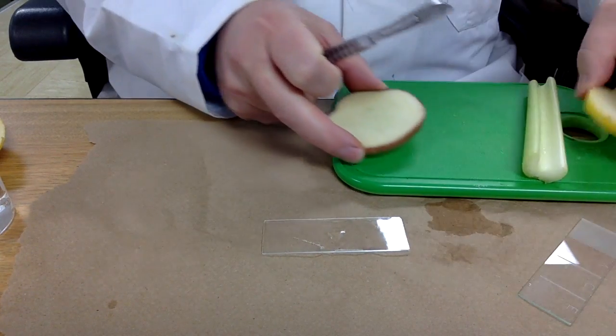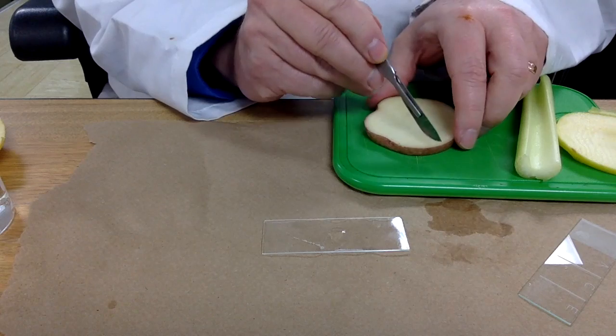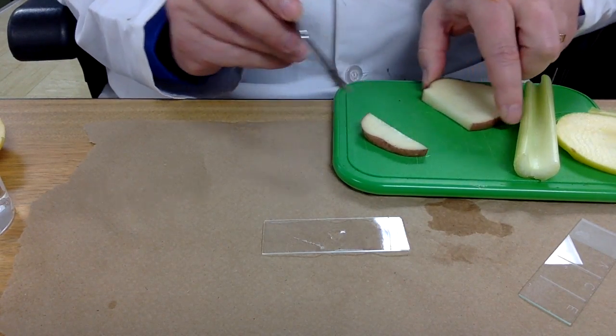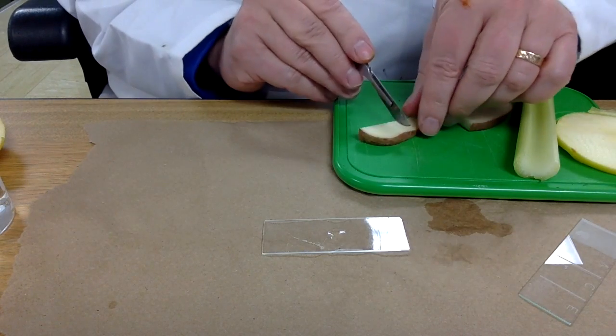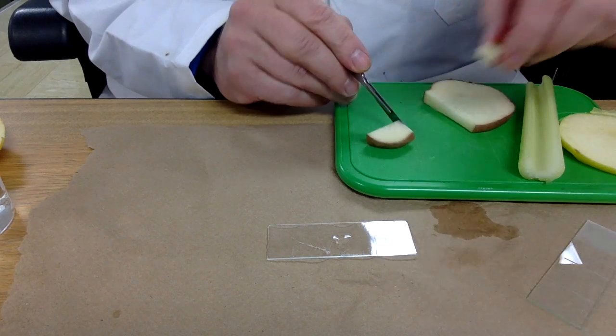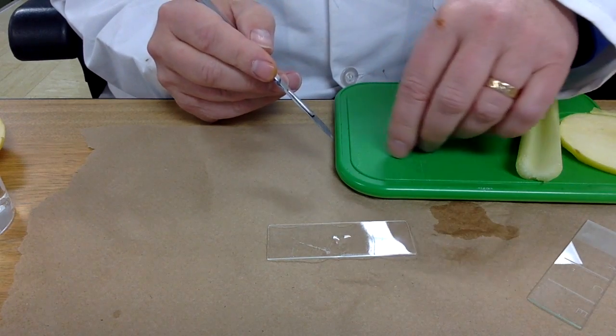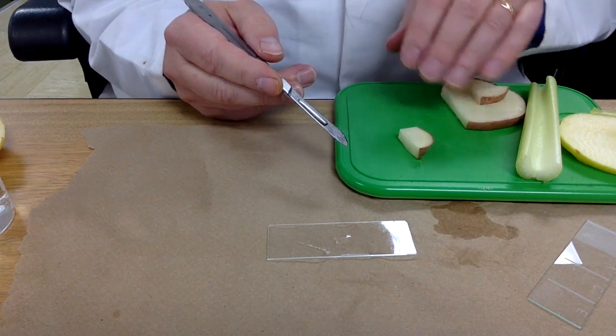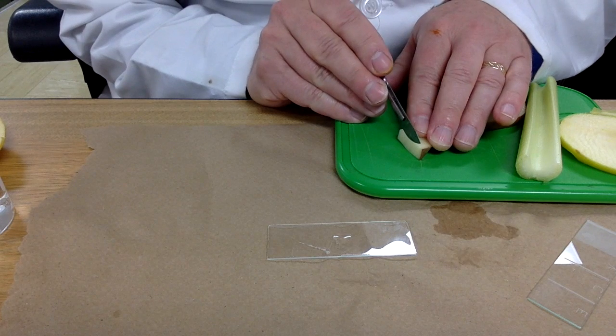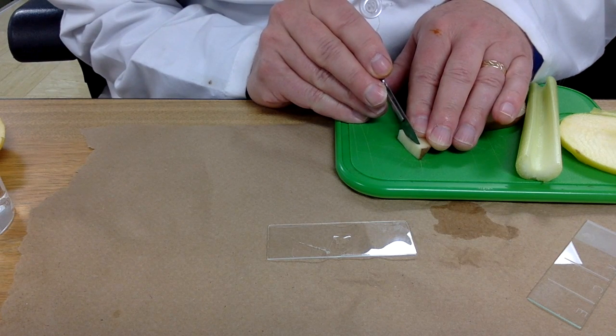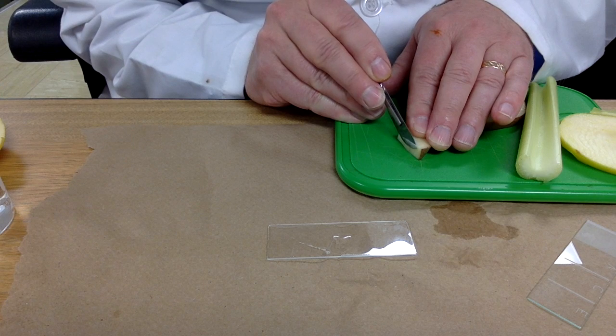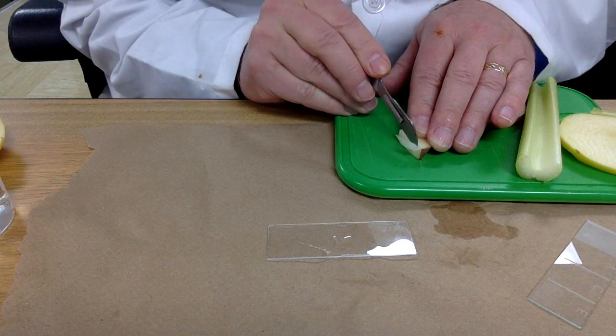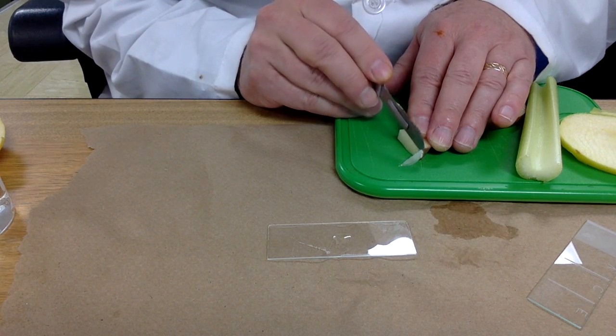To sample a potato, one will take a scalpel and slice the potato so you have something you can work with. Most young biologists tend to over-imagine what they need on their cover slip. You're going to try to cut an extremely thin slice and you'll use your scalpel to transfer that slim slice.